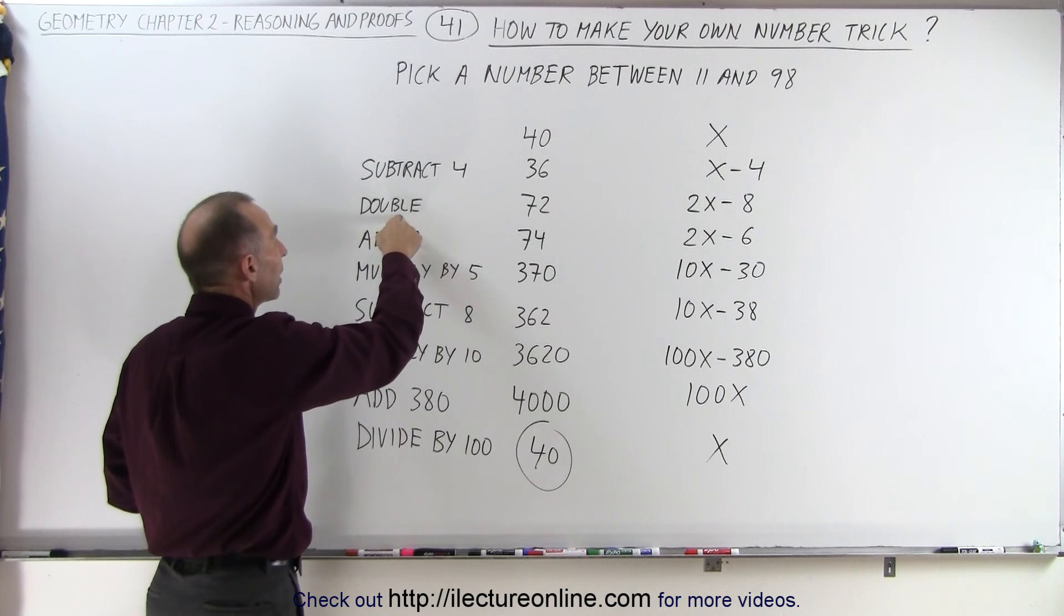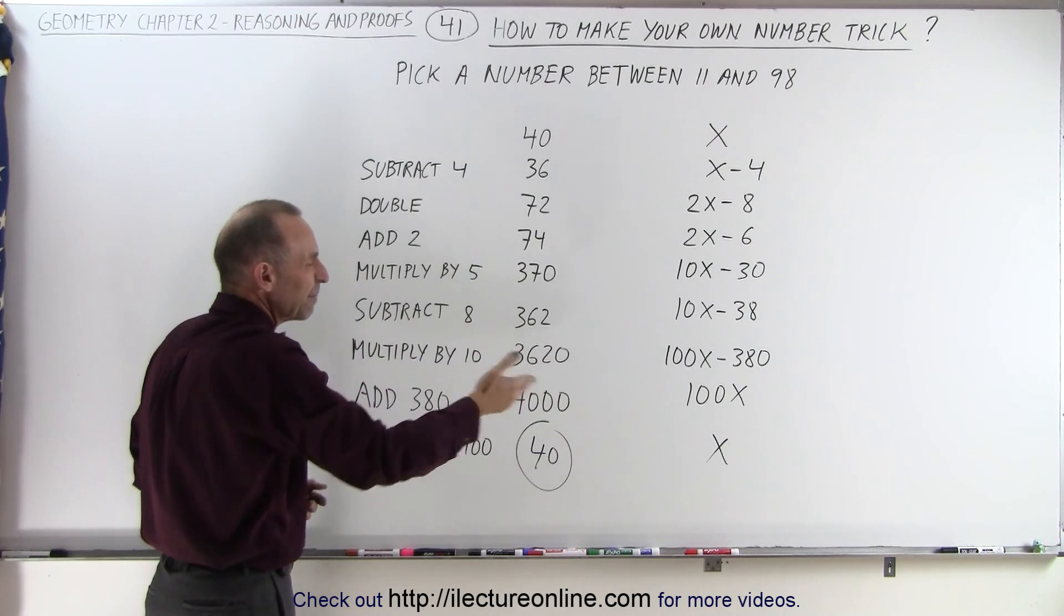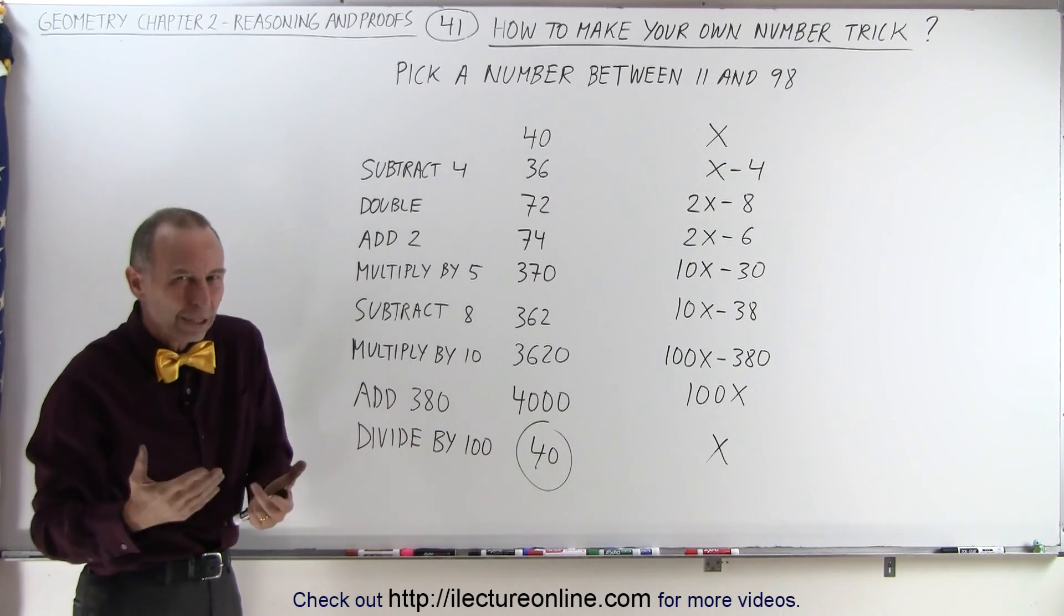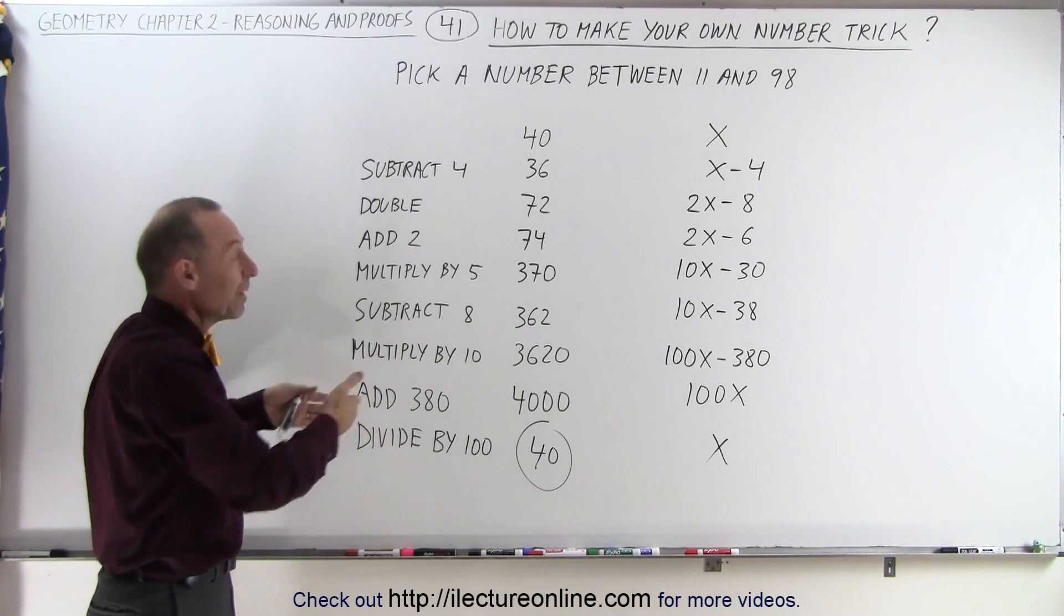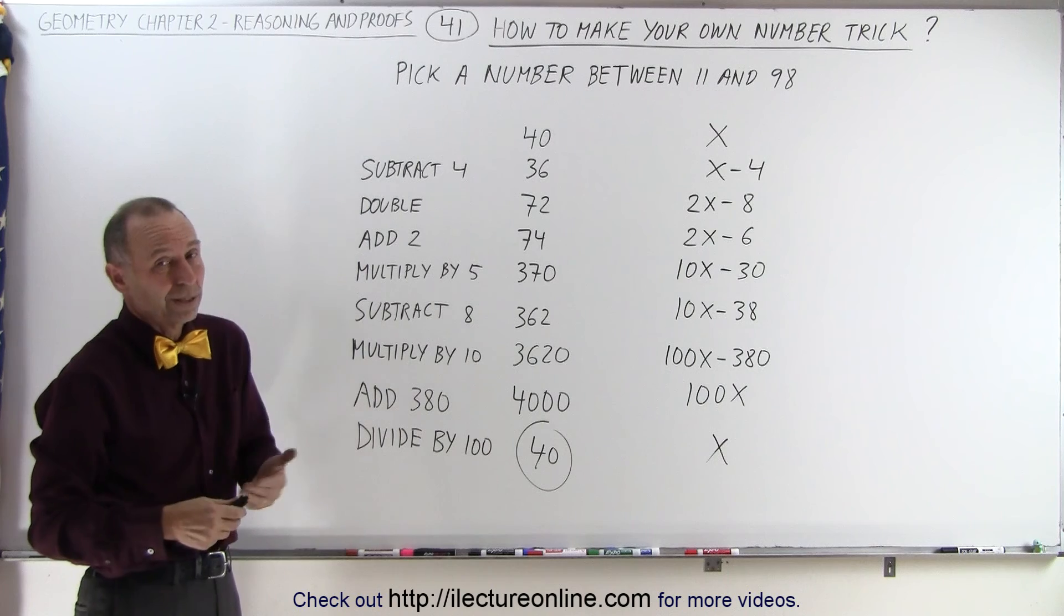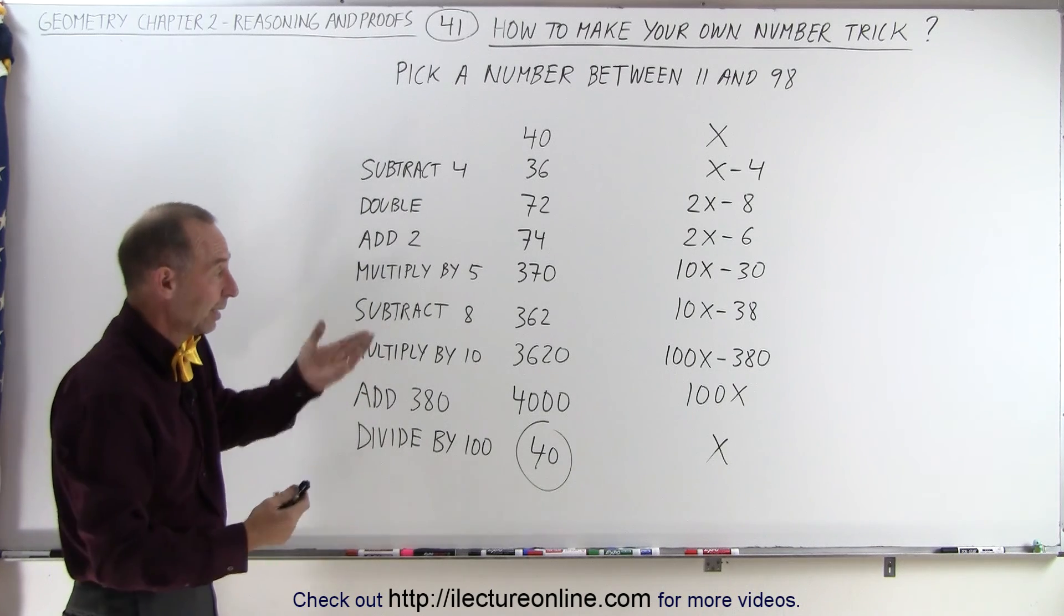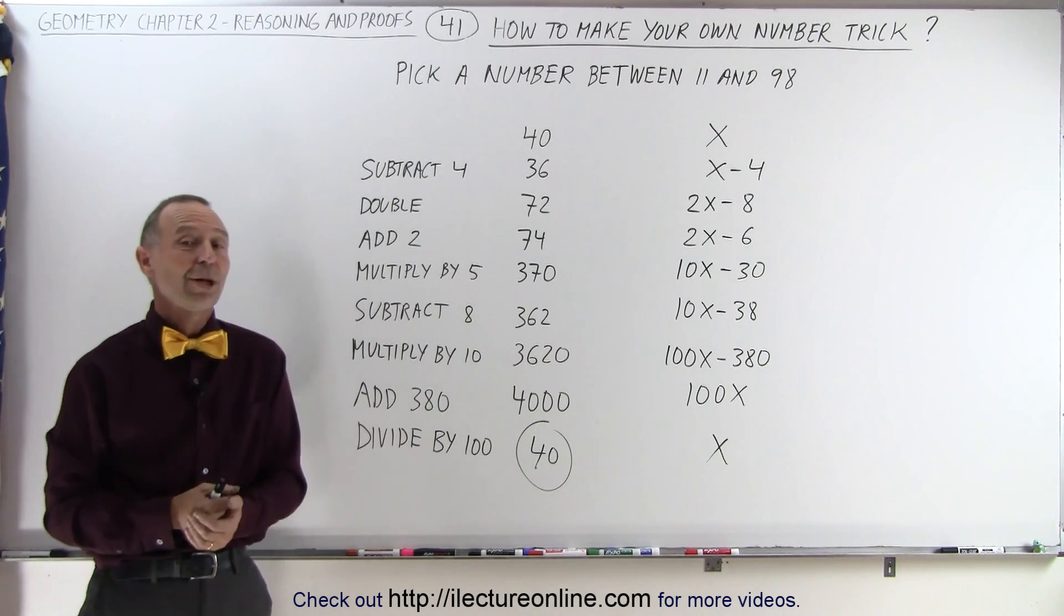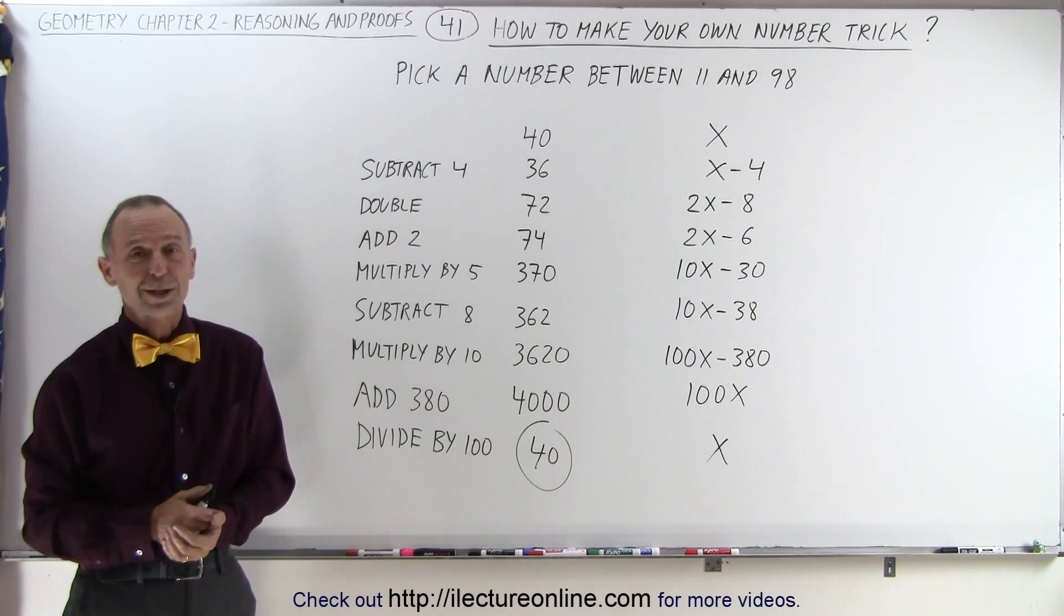If we didn't double it here, then we would have to divide by 50. But it's easier to divide by 10 or divide by 100. So that's why you make up the trick in such a way that at the end, you get rid of one or two zeros by dividing by 10 or dividing by 100. That makes it a lot easier to work with the numbers. And that's how you make your very own trick.